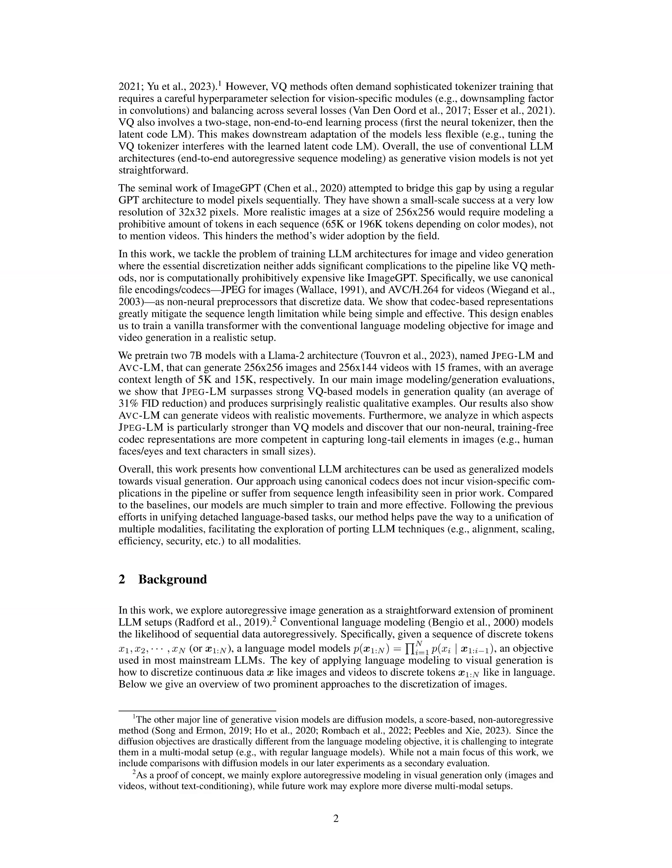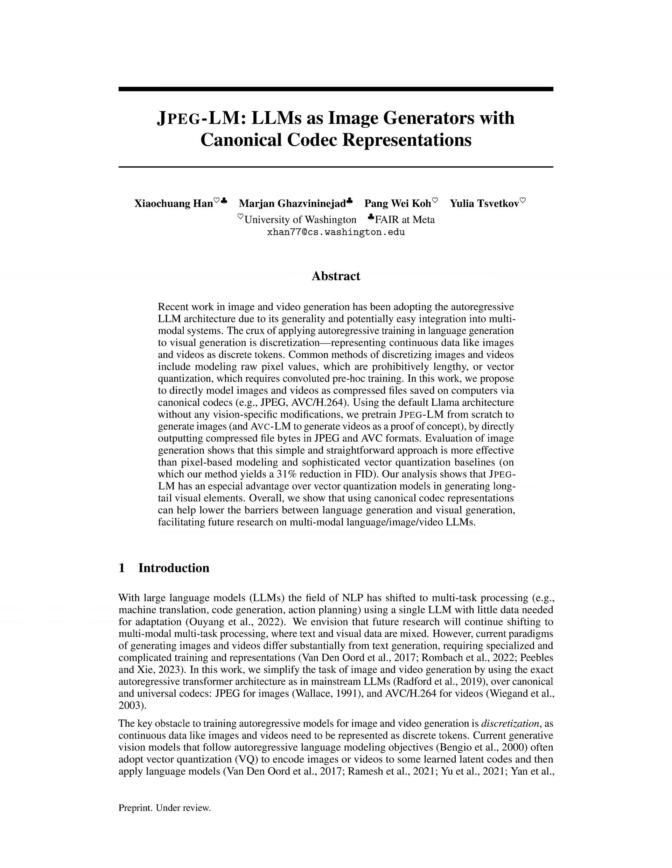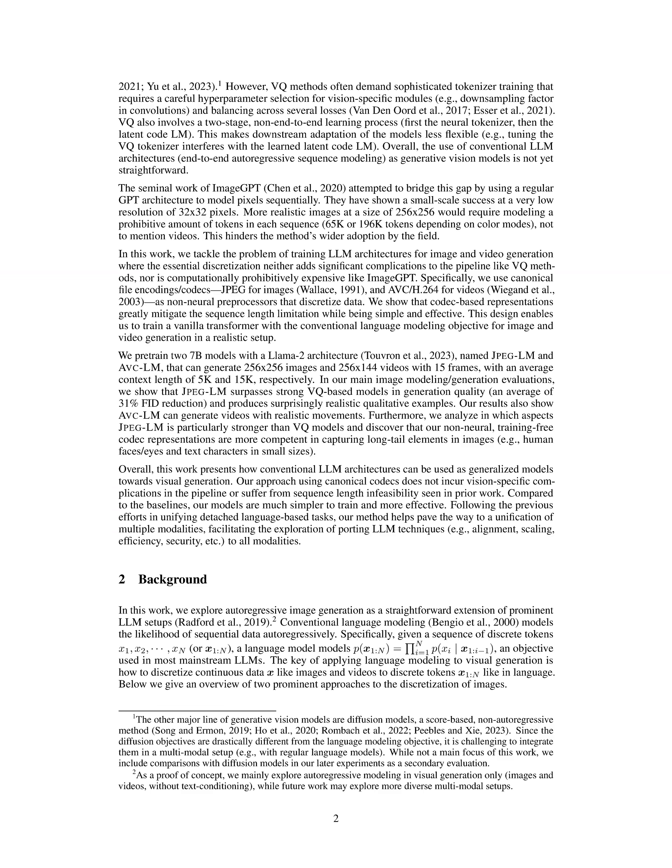Additionally, methods like image GPT face prohibitive sequence length limitations when generating higher-resolution images. By utilizing canonical codecs like JPEG for images and AVC H.264 for videos, the proposed approach simplifies the discretization process, allowing for end-to-end training without the complications of vision-specific modules. This results in a more efficient and effective model, as demonstrated by the superior performance of JPEG-LM and AVC-LM compared to existing VQ-based models.